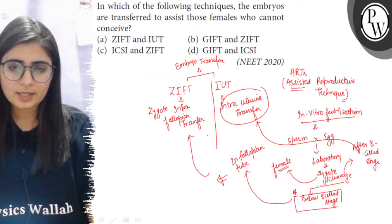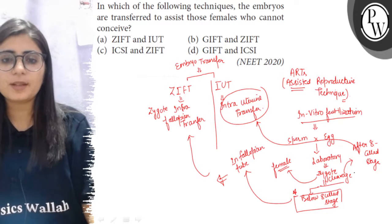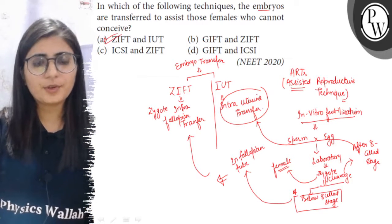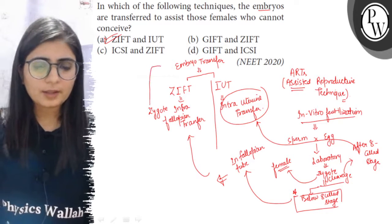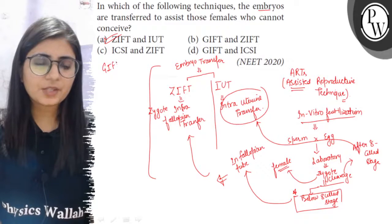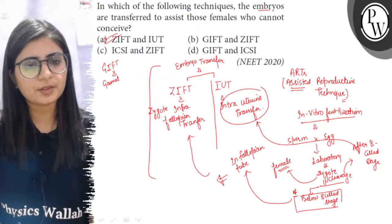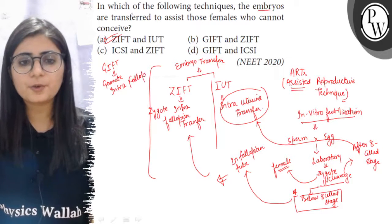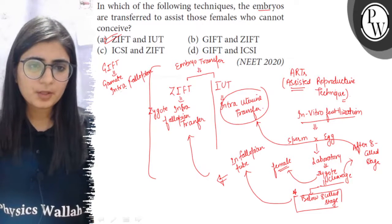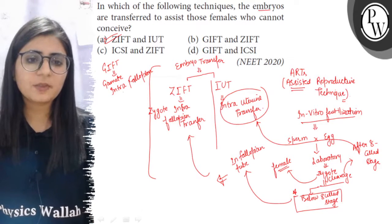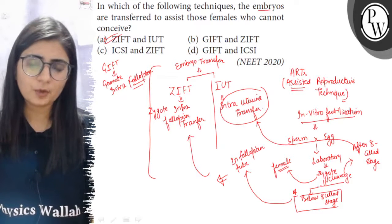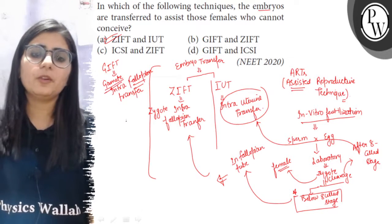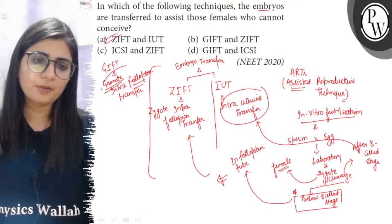In both ZIFT and IUT, the embryo is being transferred, so these are techniques of Embryo Transfer. Now, looking at GIFT — Gamete Intra-Fallopian Transfer. As the name indicates, here the gamete is transferred. If a female is unable to produce an ovum, the ovum from another female (a donor) is transferred into the fallopian tube of that female.